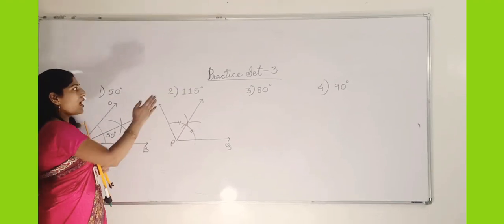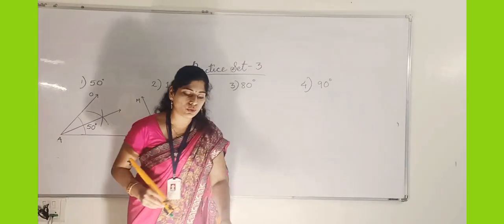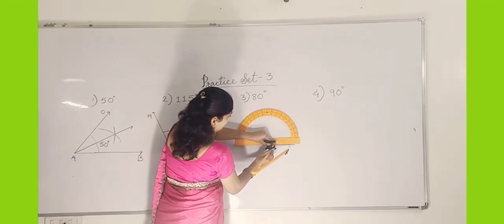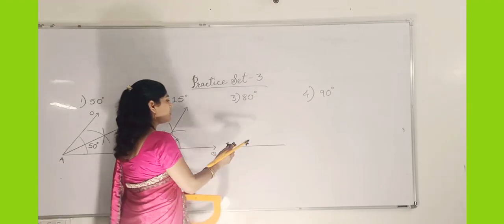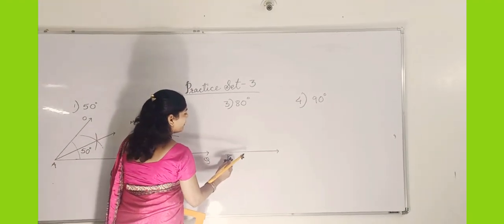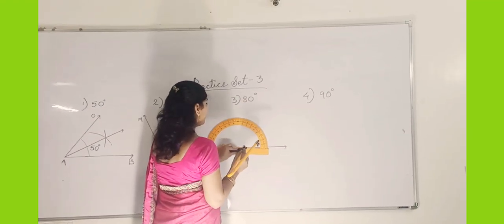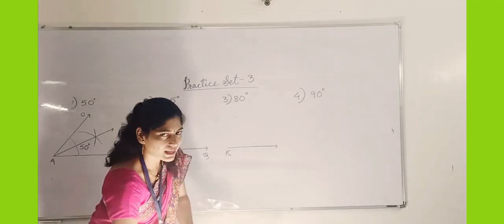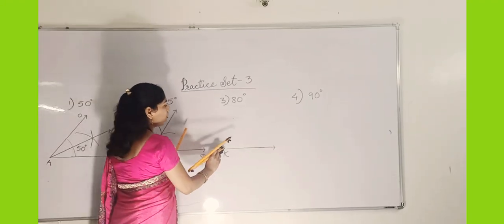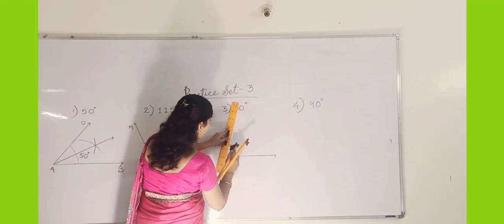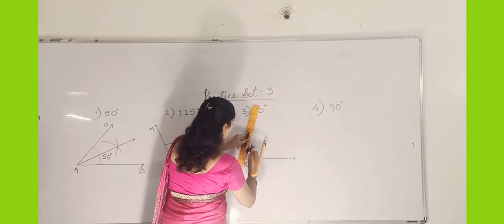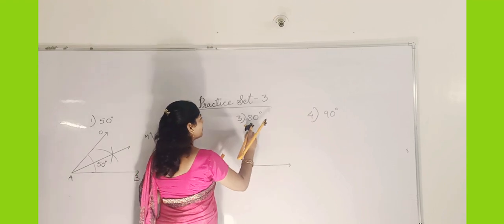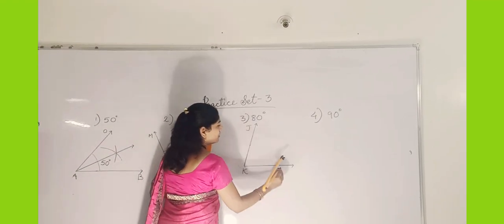Now you also try, students — angle 80 degrees and angle 90 degrees. Let us do it together. First we draw a ray and give the endpoint the name K. Put the midpoint of the protractor on the endpoint of the ray. Take the angle point at 80 degrees. Join the vertex to the point, and that will be the 80-degree angle. So name it J, K, L.